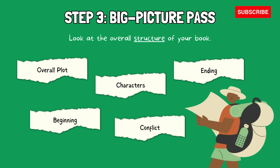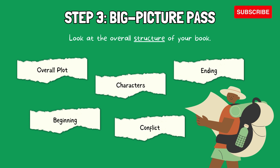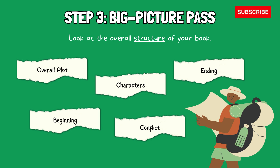Step 3: Big Picture Pass. Start with the big stuff, also known as a structural edit. Look at the overall structure of your book. Is the plot logical? Are the characters well-developed? Does the ending feel satisfying? Make any major changes needed to ensure your story is strong. It's important to not get distracted by small errors like spelling mistakes at this stage, as the focus is on the big picture.